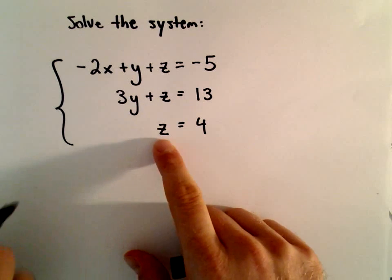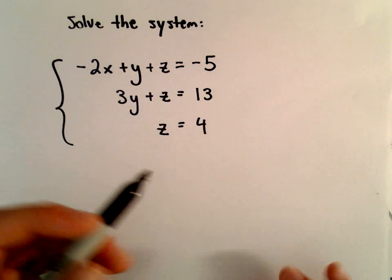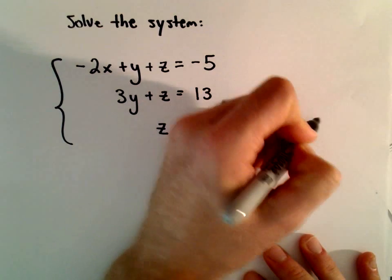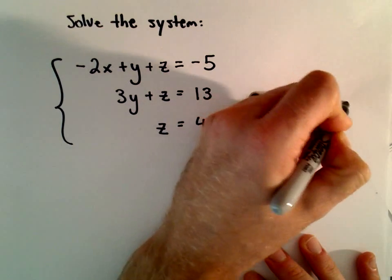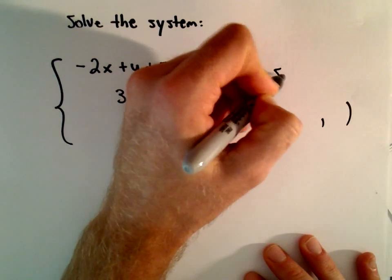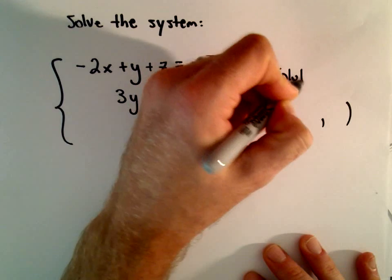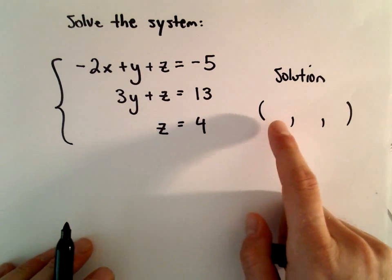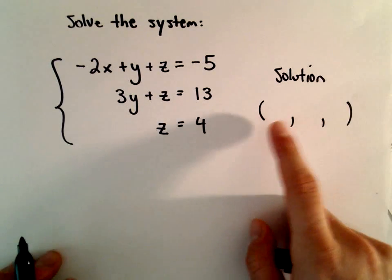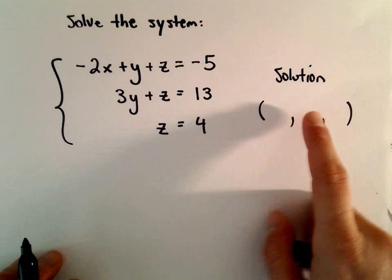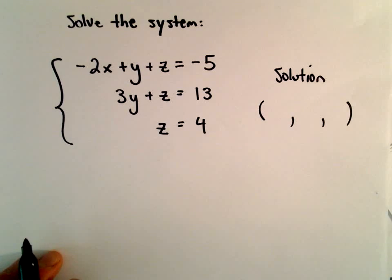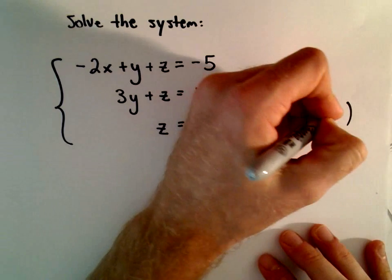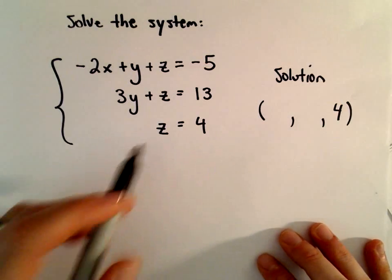We're already told that z equals 4. Eventually our solution, in this case, will be a point — it will be an ordered triple — so we'll have an x, a y, and a z value. We already know that the z value is 4.